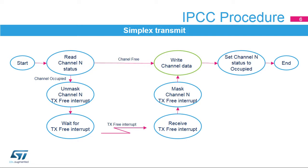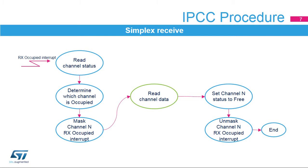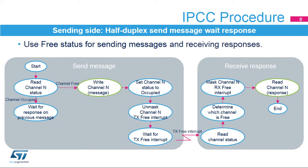When the channel status flag is checked to be free, a message can be directly written in the channel data buffer. When a channel-occupied interrupt is generated, the receiving side determines which channel is occupied and masks the appropriate channel-occupied interrupt. Subsequently, the message can be read from the channel data buffer. Once read, the channel status flag is cleared to free, or flow-on, and the channel-occupied interrupt is unmasked.